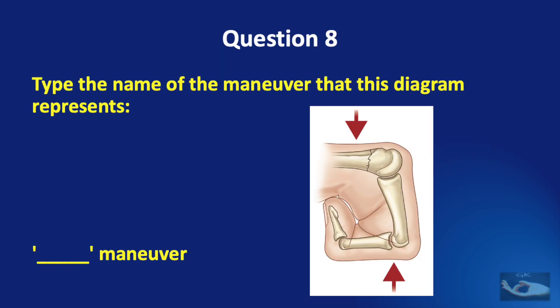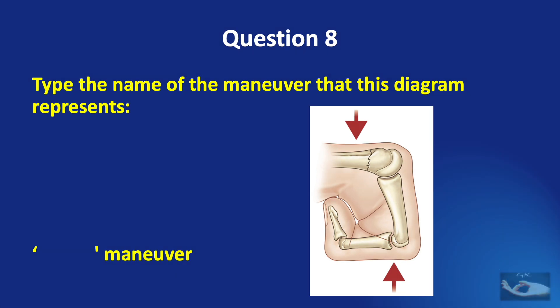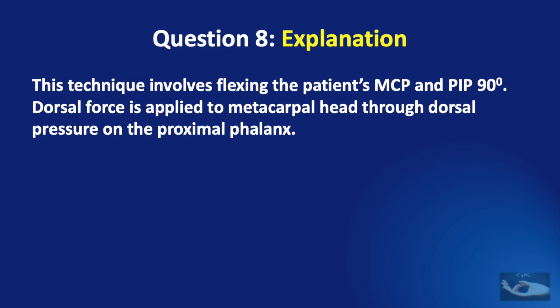Question number eight: type the name of the maneuver that this diagram represents, dash maneuver. And the answer is JAS maneuver. This maneuver involves flexing the patient's metacarpophalangeal joint and the proximal interphalangeal joints to 90 degrees.